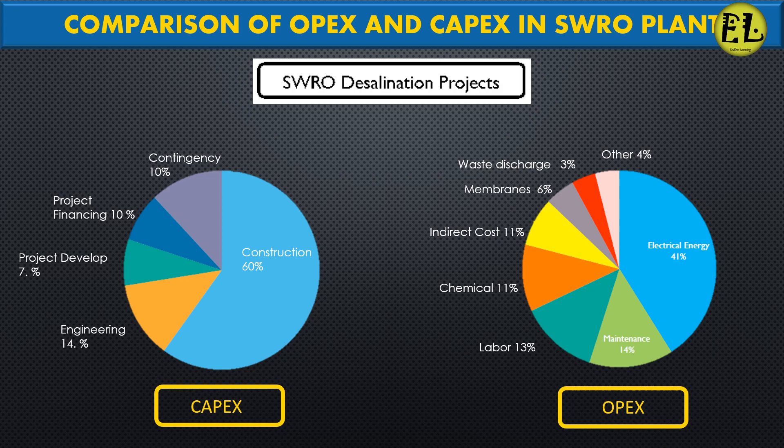Opex costs include the cost of electricity, chemicals, labor, maintenance, and repairs.